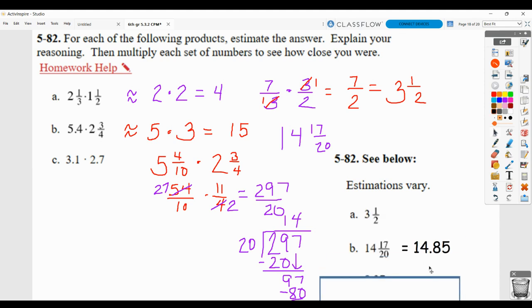They also pointed out that if you had chosen to make the 2 and 3/4 into a decimal, which would be 2.75, that they would take a decimal answer as well.